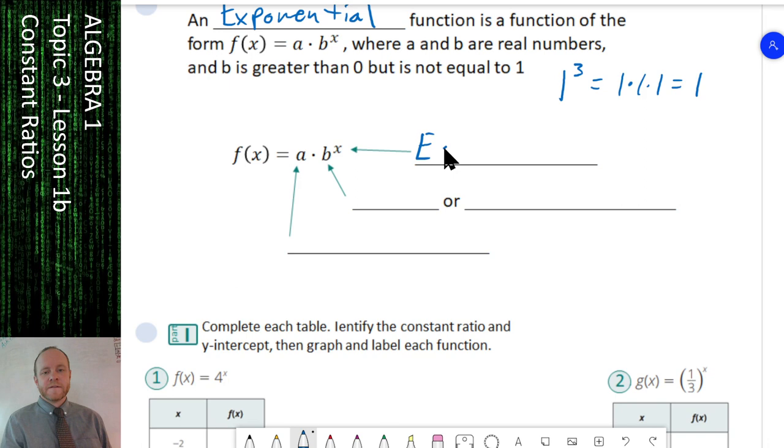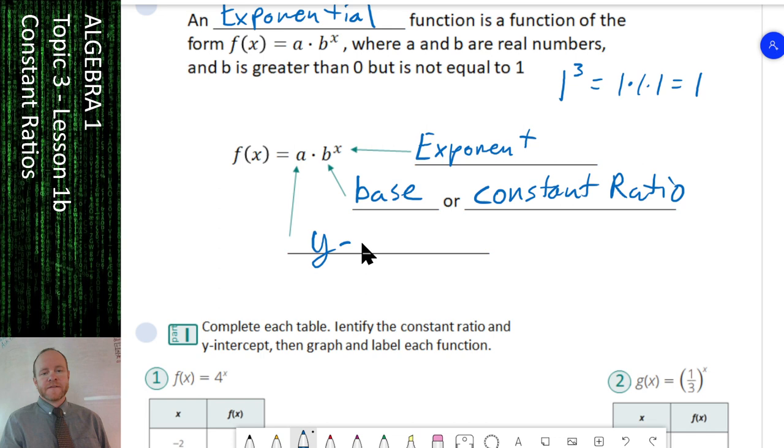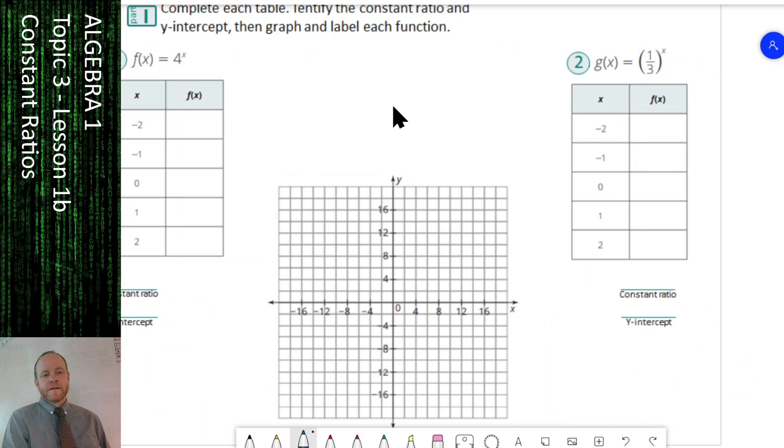So there's basically three parts to this function. The little tiny x represents our exponent. The thing that is raised to that exponent, we're going to call the base. In this lesson, we're also going to refer to it as the constant ratio. And then this number out front is where our line crosses the y-axis, so it's the y-intercept. We're going to use constant ratio and y-intercept as we're graphing our functions.